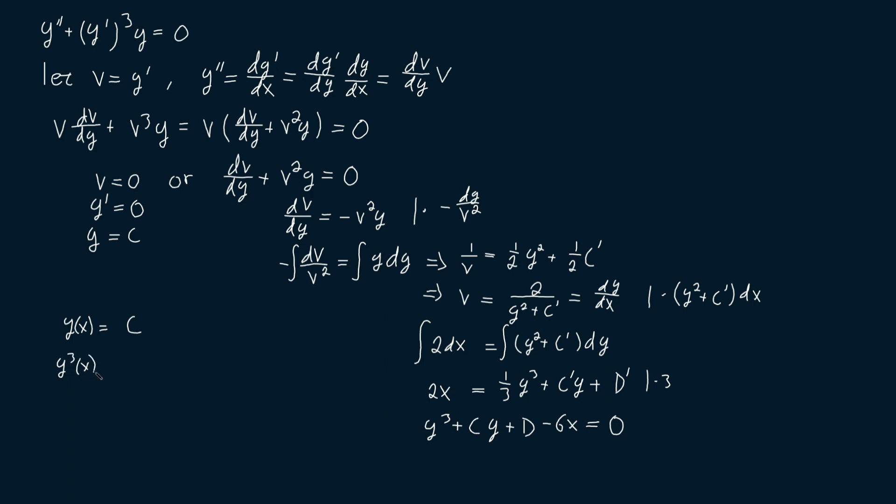or y is a solution to this implicit equation, y of x cubed plus, well, since we used c already here, let's change this c to d, and this d here to e, since they are just some constants, plus d y of x plus e minus six x is equal to zero,